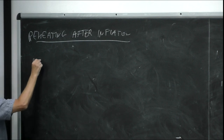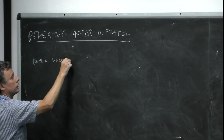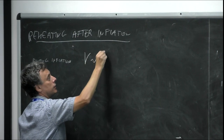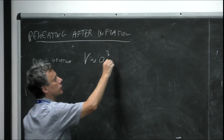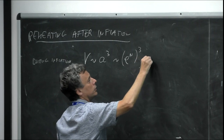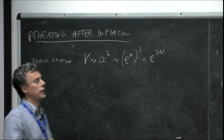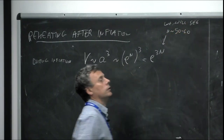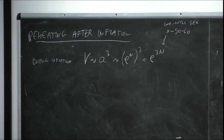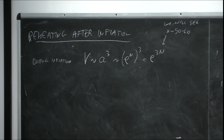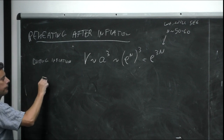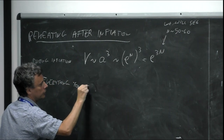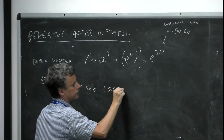During inflation, the volume grows as a³ = e^{3N}, and we will see that typically N is of order 50 to 60. So during inflation the comoving volume grows enormously. Any particles at the onset of inflation just get diluted away and you don't see them anymore. Everything that is left after inflation in this simplest version is the inflaton field.